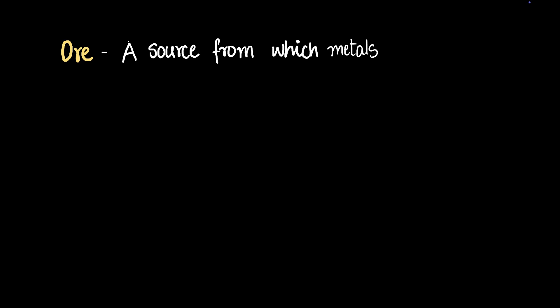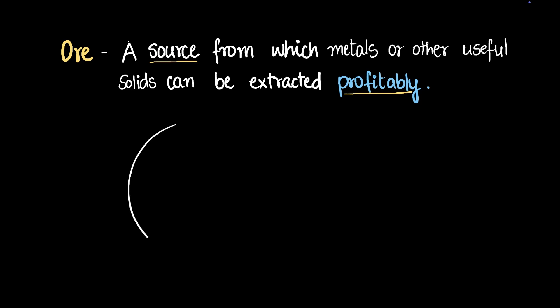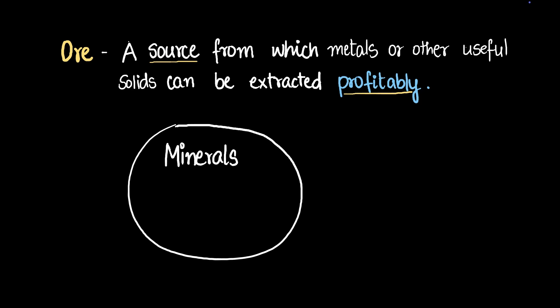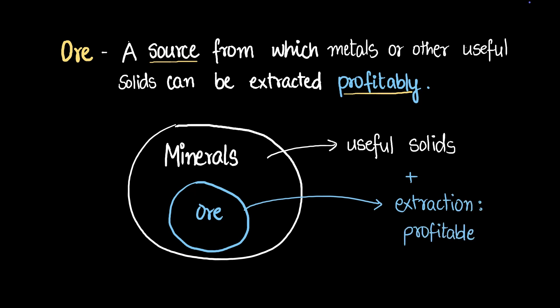An ore is a source from which some metal or some other useful solid can be extracted profitably. A mineral has to have some useful metal or useful solid. An ore, on the other hand, is a source from which you can profitably extract useful stuff. Not all minerals are ores, because only some of them allow profitable extraction. The minerals from which we can extract metals profitably are called ores.